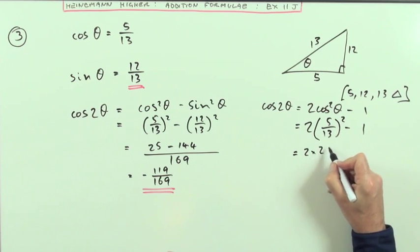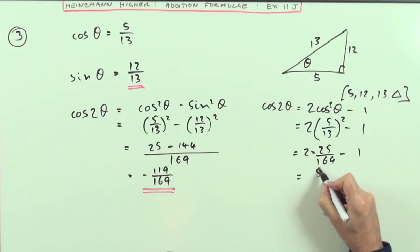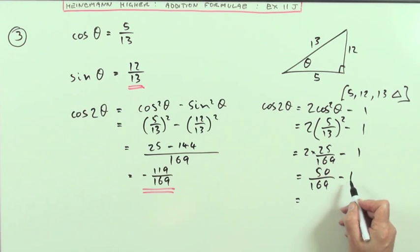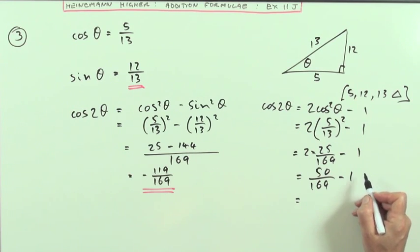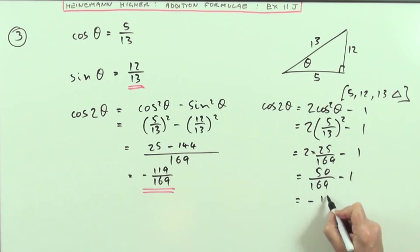That's going to be 2 times 25 over 169 minus 1. It's actually taking a wee bit longer. Because now I've got to take away 1, which I'll have to change into 169. So I'll have to do 50 take away 169, which of course still gives you negative 119 over 169.